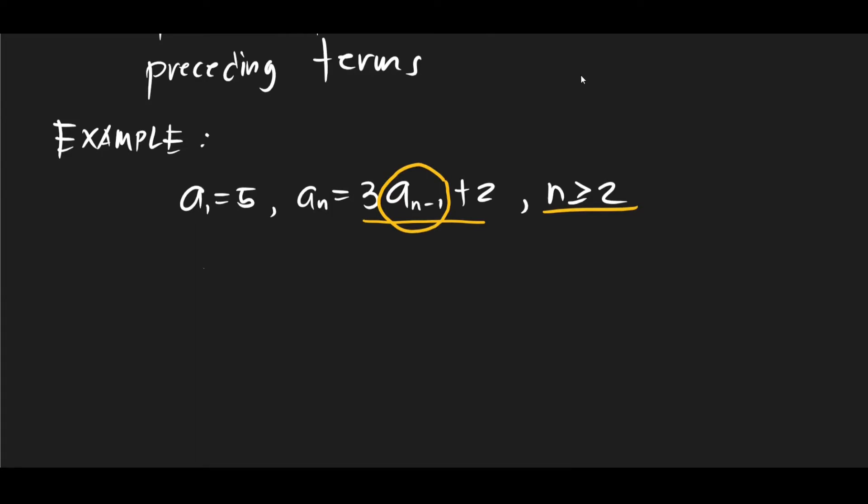So as we are given here, we already have a1 which is equal to 5, right? There you have it. And then if you want to calculate a2, so n is greater than or equal to 2. So a2 is equal to 3 times a(n-1), so a2 minus 1, right? Plus 2. So what is this? So 3 times a1 plus 2.